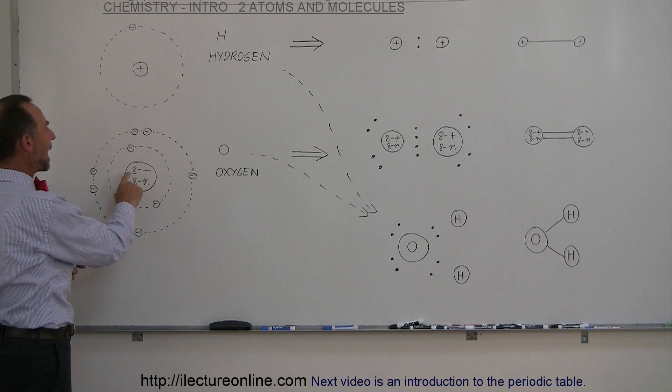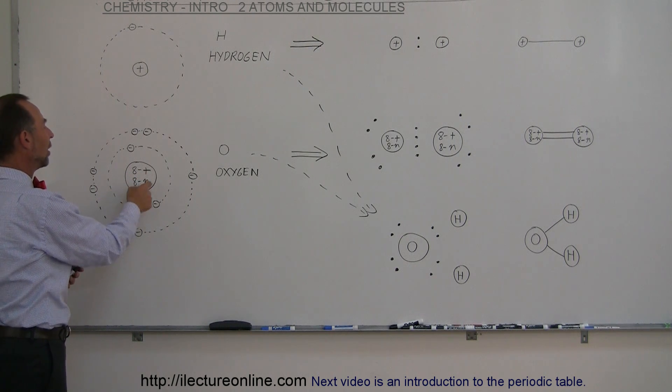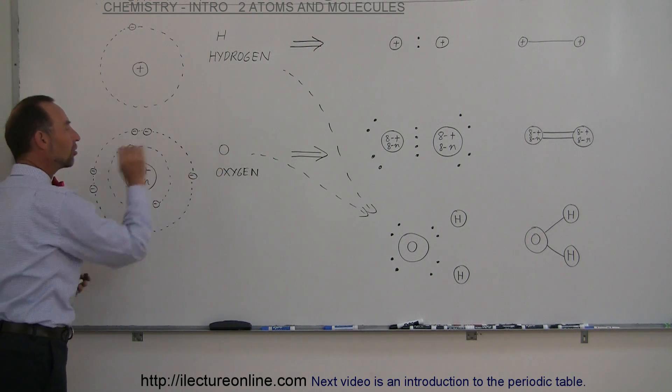Here in our example we have, let's say, eight protons and eight neutrons. The fact that it has eight protons makes it an oxygen atom.